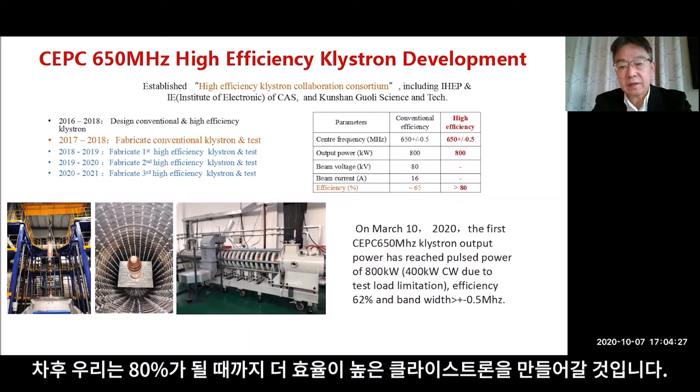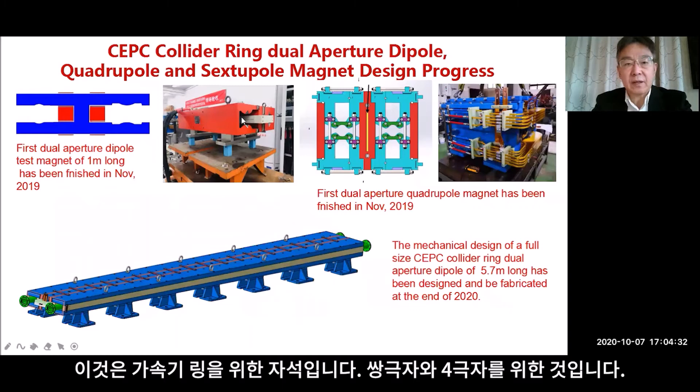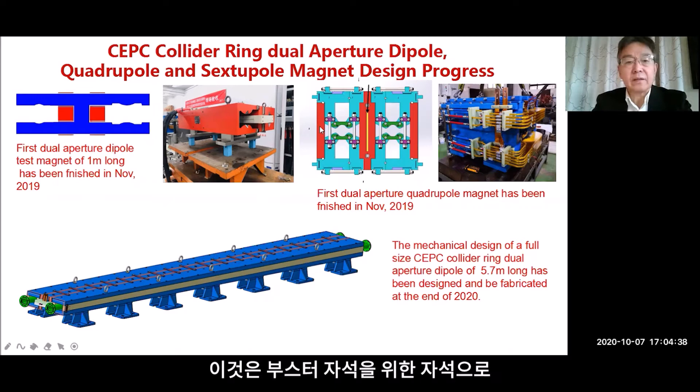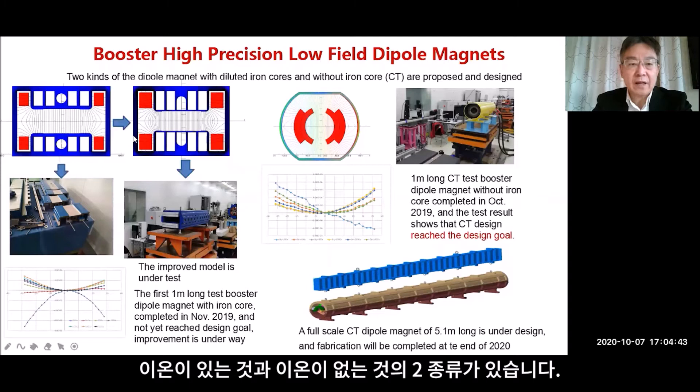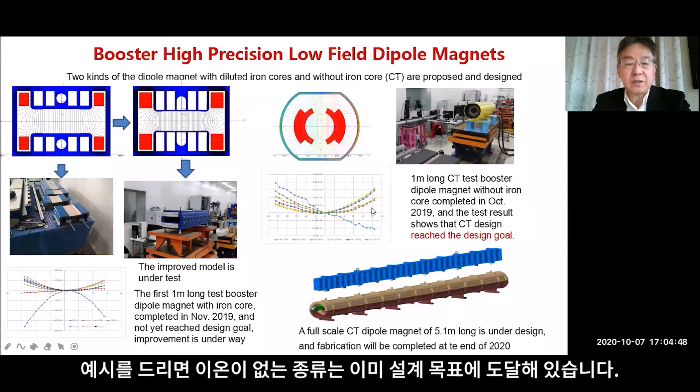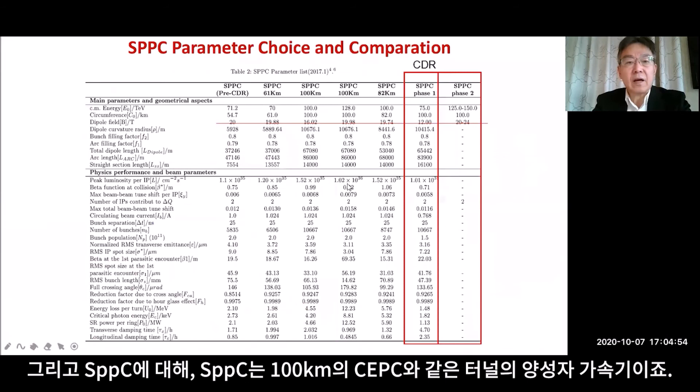This shows the magnets for the collider ring — dipole and quadrupole — and the magnets for the booster in two kinds: with iron and without iron. For example, the without-iron version has already reached the design goal. This is the vacuum chamber, as you can see.